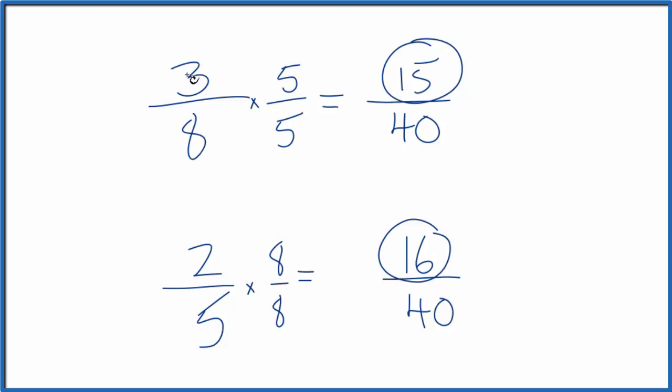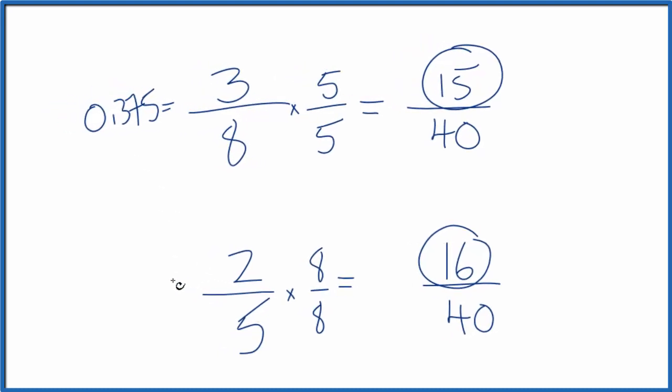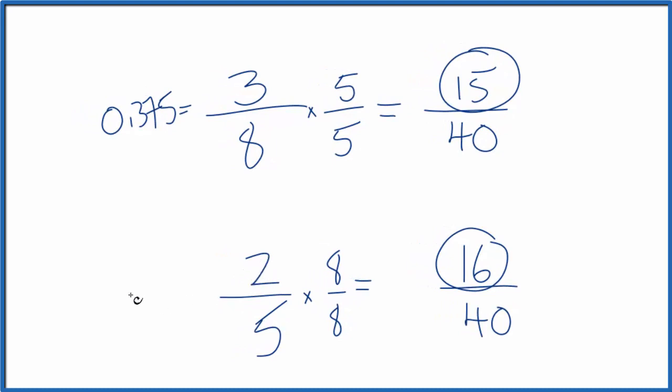If you divided 3 by 8 on a calculator, you'd get 0.375. If you divided 2 by 5, you would get 0.4. You could consider that 00 after there, same thing. And you can see again that 2 fifths is larger than 3 eighths.